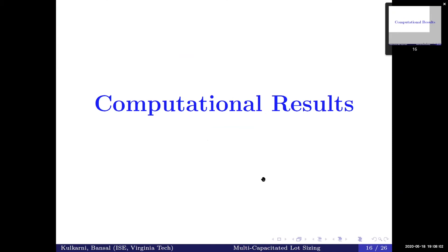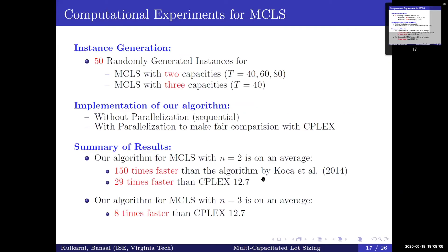Let's get into the computational results. We perform computational experiments to evaluate the efficiency of our polynomial algorithms. We generate random instances for MCLS with two machines and three machines, with two implementations: one with parallelization and one without. Our algorithm for MCLS with n=2 is about 150 times faster than the current best algorithm, and about 29 times faster than CPLEX. Our algorithm for MCLS with three machines is also about eight times faster than CPLEX.